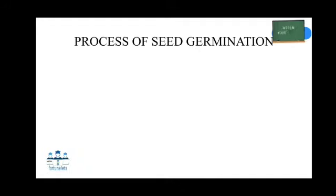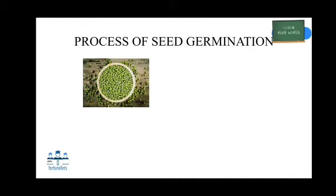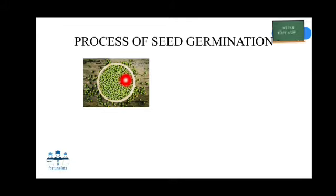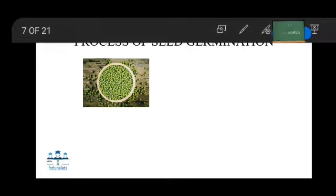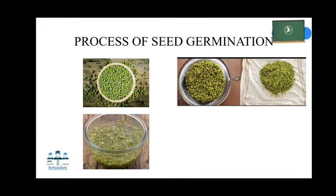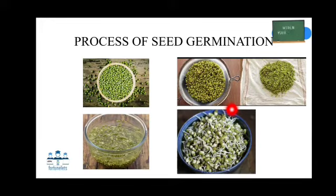Most of the plants grow from seeds. Let's learn how a tiny seed turns into a plant. The important things needed for germination of a seed are water, air, and warmth. Each seed has an embryo in it. Once the seed gets water, warmth, and air, it starts germinating and a white color structure appears on the outside of the seed.